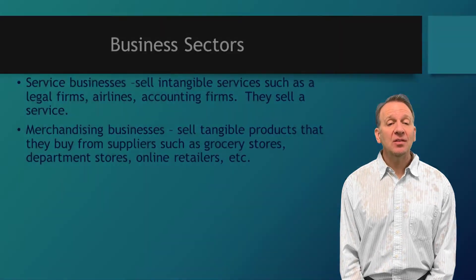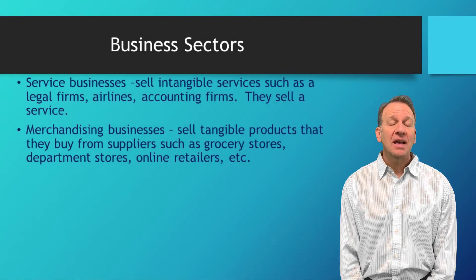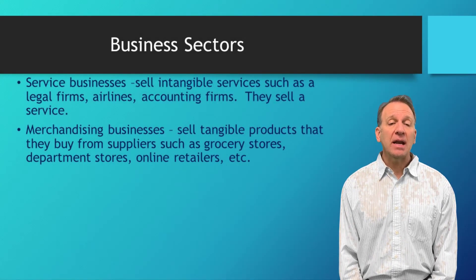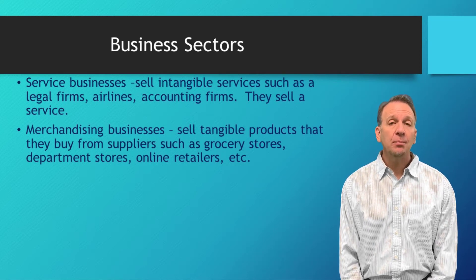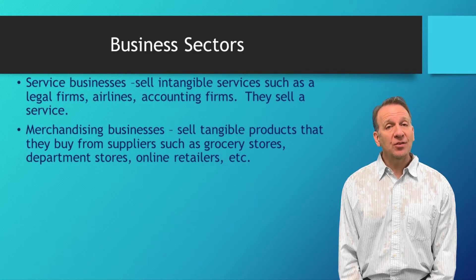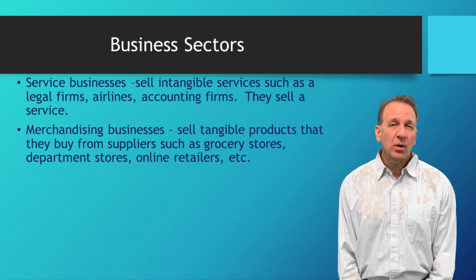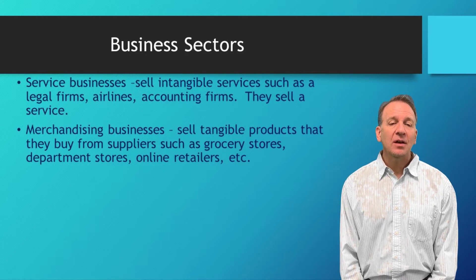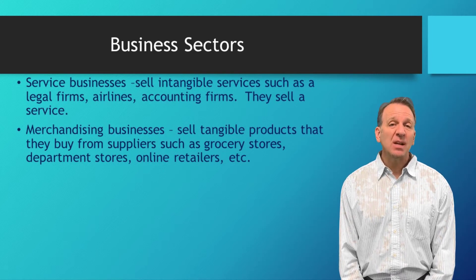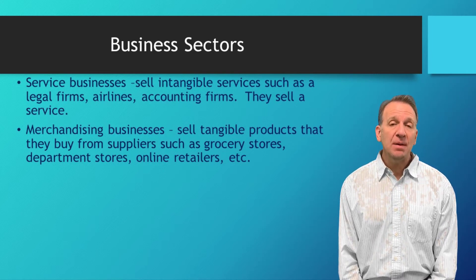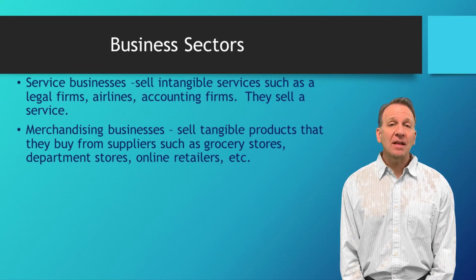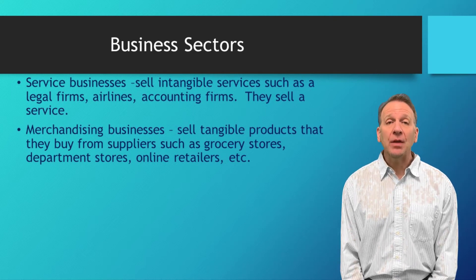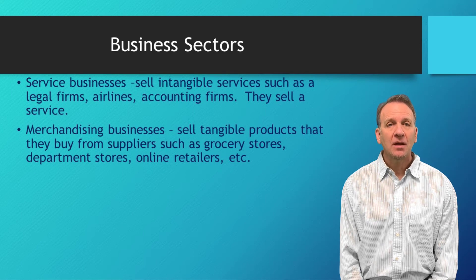The next type is a merchandising business — they sell a tangible product. They buy items from suppliers or other businesses and then turn around and sell them. Examples would be grocery stores and department stores — they sell something that has already been manufactured. They will have inventory; think about going into a grocery store where everything is inventory they're trying to sell.